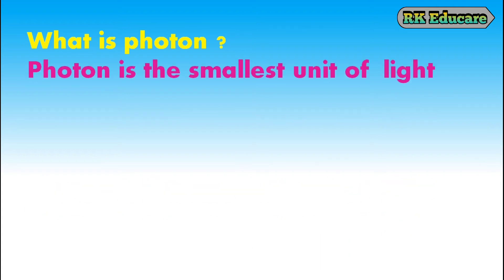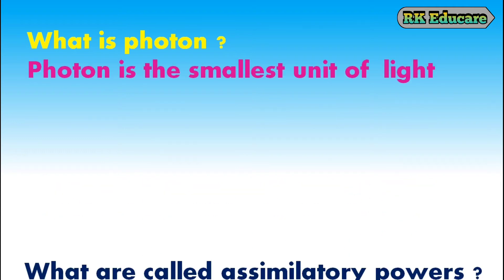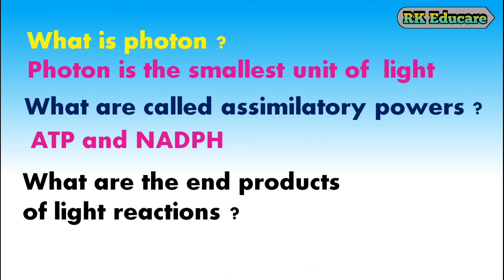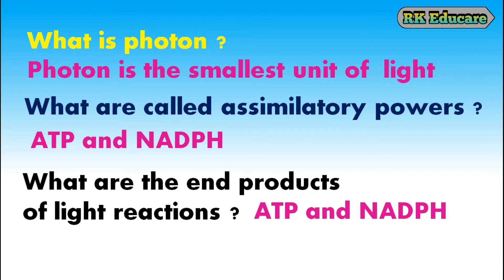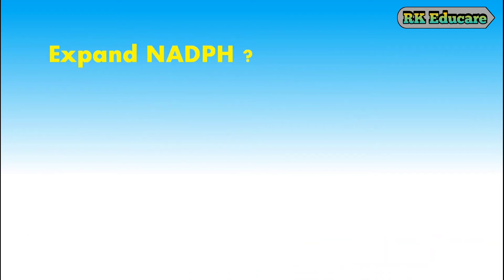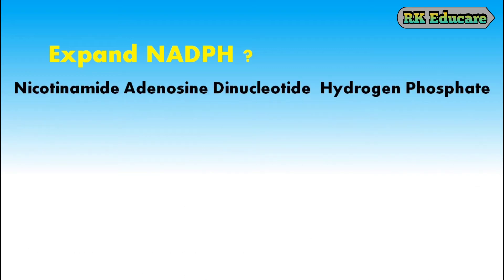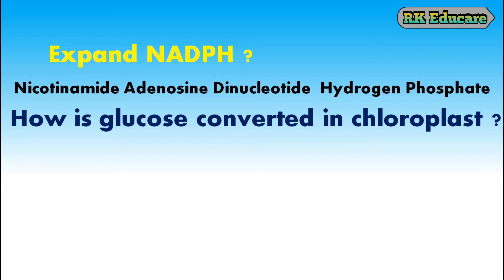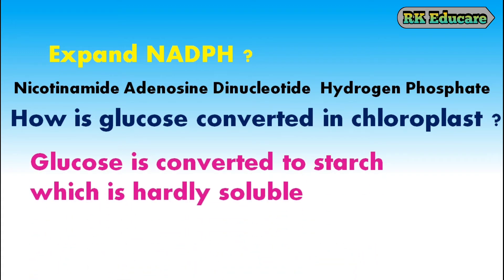What is a photon? A photon is the smallest unit of light. What are called assimilatory powers? ATP and NADPH are called assimilatory powers. What are the end products of light reactions? ATP and NADPH are the end products of light reactions. ATP stands for adenosine triphosphate. NADPH stands for nicotinamide adenosine dinucleotide hydrogen phosphate. How is glucose converted in the chloroplast? Glucose is converted to starch, which is hardly soluble — it occurs in the chloroplast.